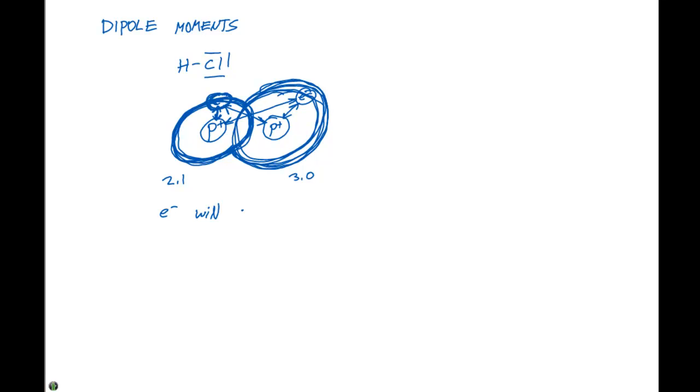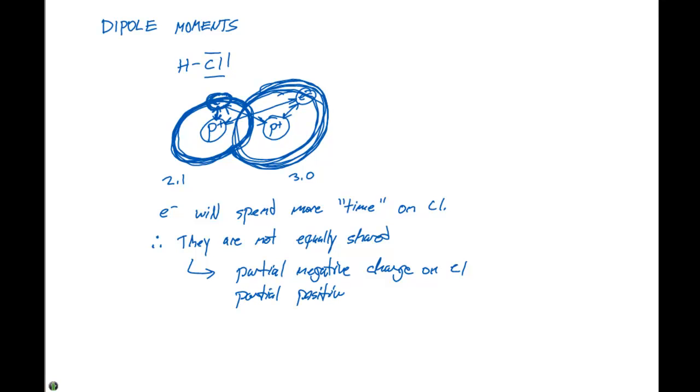the electrons will spend more time on the chlorine. So therefore, they are not equally shared, and this is going to lead to a partial negative charge on the chlorine, and a partial positive charge on the hydrogen, and this is what leads to our polar covalent bond.